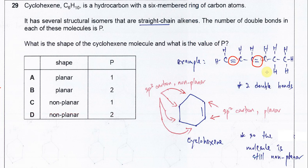C=C double bond in the structure. So that's why the number of double bonds in the molecules is P, which means two, so two double bonds.